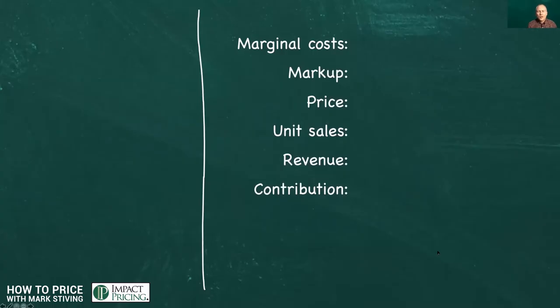If we go to the chalkboard, what we see is, let's take a look at an example where we've got marginal costs of $100, and we want a 100% markup. So our markup at 100% means that we're going to have a price of $200. So far, so good.